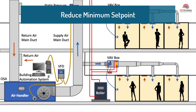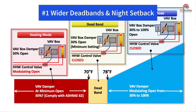This strategy will depend on the space type and usage. Number one: wider dead bands and night setbacks. On average, this was the number one way to save energy. The dead band is the temperature range when the HVAC system is neither calling for heating or cooling. By widening the dead band, the amount of time that the HVAC system saves energy increases. In California, zonal thermostats used to control both heating and cooling should be capable of providing a dead band of at least 5 degrees Fahrenheit.